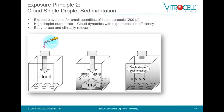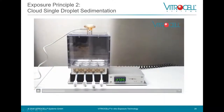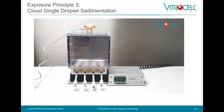Exposure principle two is the cloud single droplet sedimentation. This principle works with small quantities of liquid aerosols — 200 microliters — which you pipette into an aerosol generator. The generator forms a cloud or mist, and then via single droplet sedimentation, the particles and substances settle on the cell cultures. As shown in the video, you can see the cloud distributing evenly in the exposure chamber before settling on the cells via single droplet sedimentation.